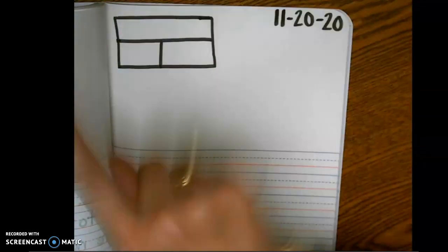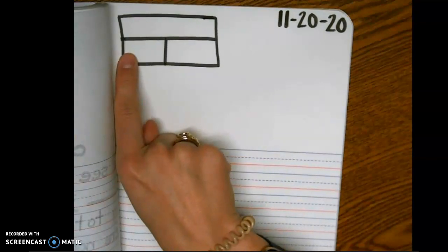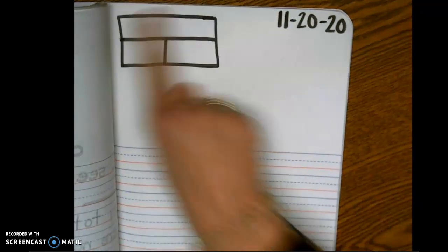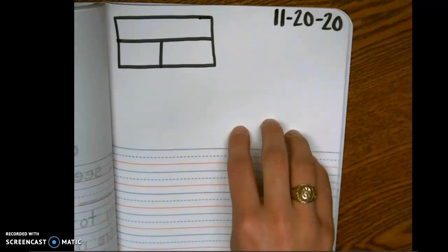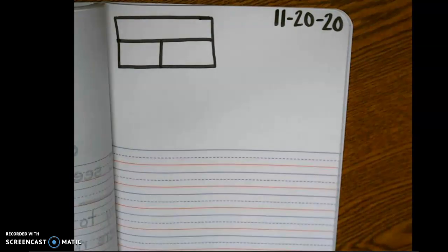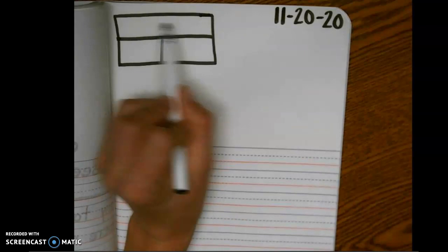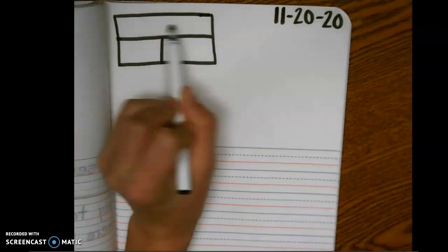I'm going to give us a whole, I'm going to give us a part, we need to use a strategy to find the missing part, and then once we find that missing part we are going to write our fact families. Go ahead and pause if you need to.